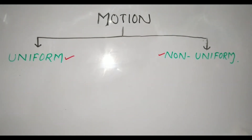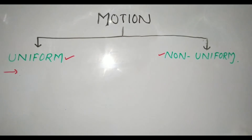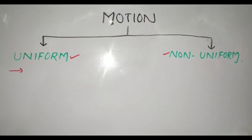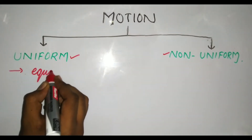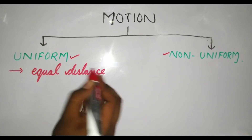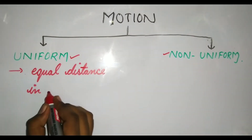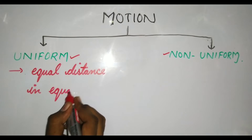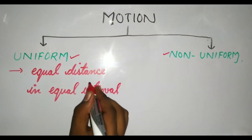There are two types of motion: uniform motion and non-uniform motion. Uniform motion is a motion in which an object covers equal distance in equal interval of time.